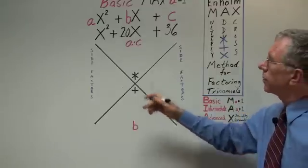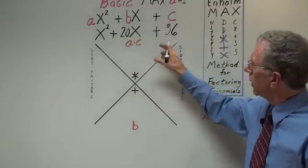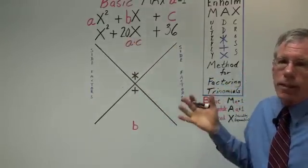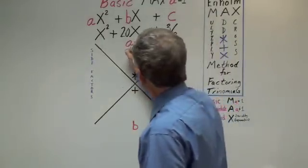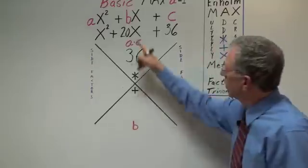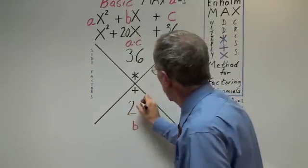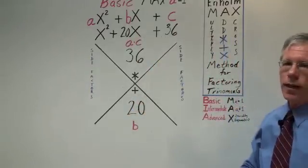Now we have another problem. x squared plus 20x plus 36. Let's just do it. A is 1, C is 36. You bring down the 20.